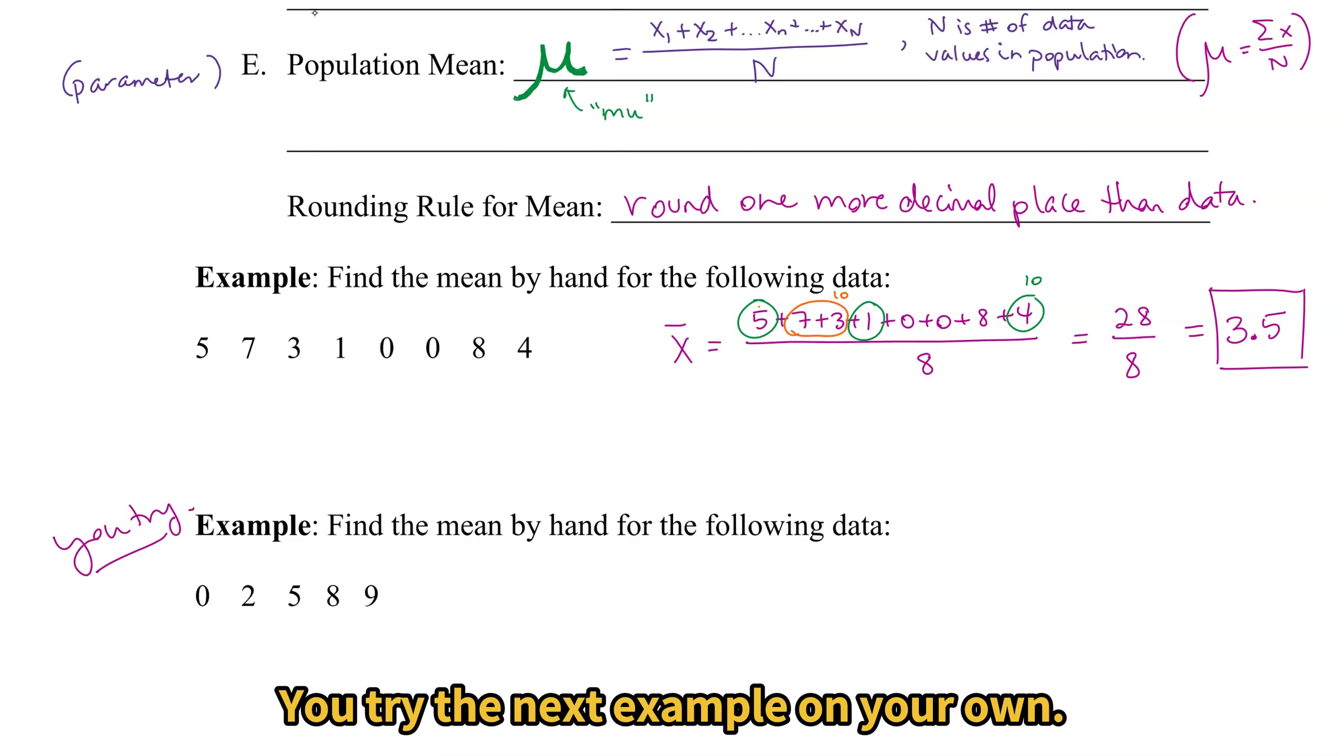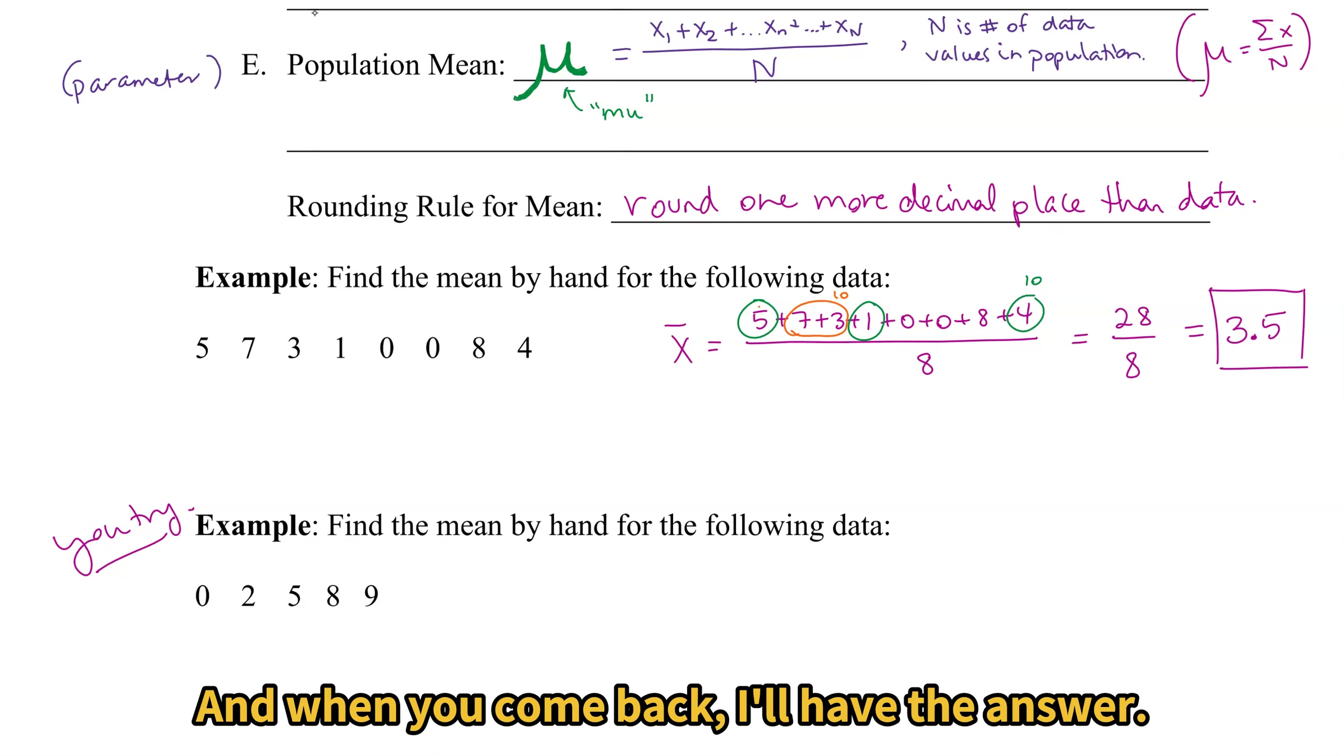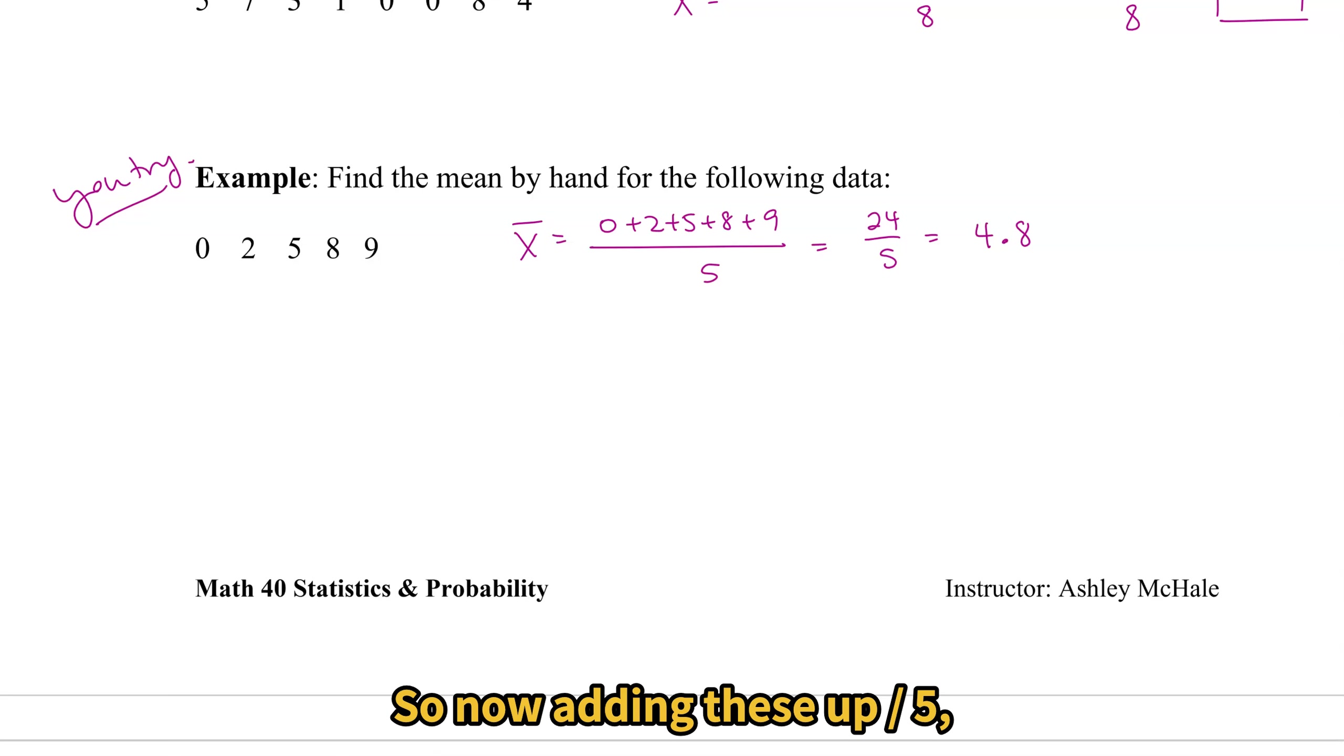You try the next example on your own, find the mean by hand. And by hand does mean you are allowed to use the calculator. Pause the video, try it on your own, and then when you come back, I'll have the answer. So now adding these up, dividing by 5, I get a mean of 4.8.